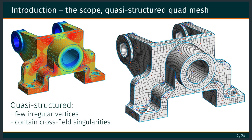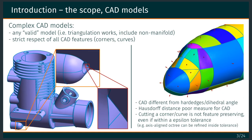We want to build quasi-structured quad meshes, meaning they have few irregular vertices, which match cross-field singularities when possible. And we want to apply this to complex CAD models.